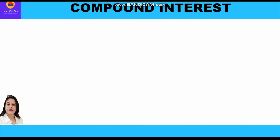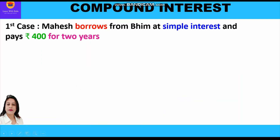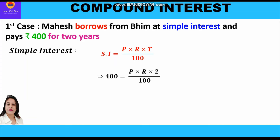In the first case, Mahesh borrows from Bheem at simple interest and pays rupees 400 for two years. The simple interest formula is SI = (P × R × T) / 100, where SI stands for interest, P is the principal, R is the rate of interest, and T is the time period. Now we shall put the values into this formula.